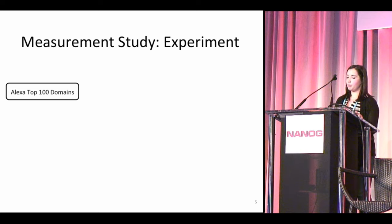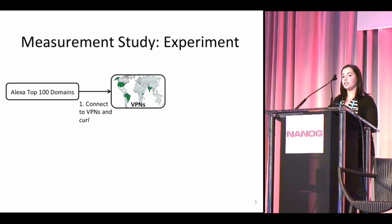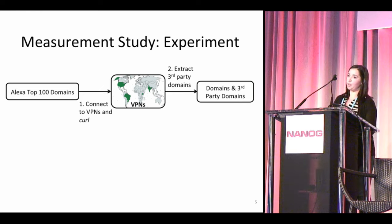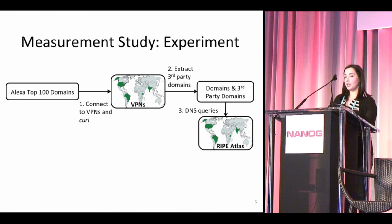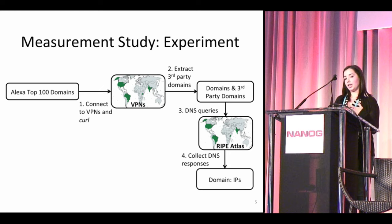We wanted to analyze paths to popular destinations, so we looked at the Alexa Top 100 for the five different countries we studied. Each has a different set of Top 100 domains, and they're pretty different. We also wanted to include third-party domains automatically fetched when pages are loaded. We had five VPN connections to the five countries we studied, and we curled each of the Top 100 domains. This gave us the HTTP response body from which we extracted the third-party domains, resulting in a set of endpoints for the paths we'd study.